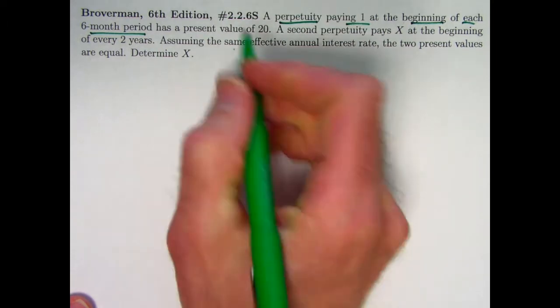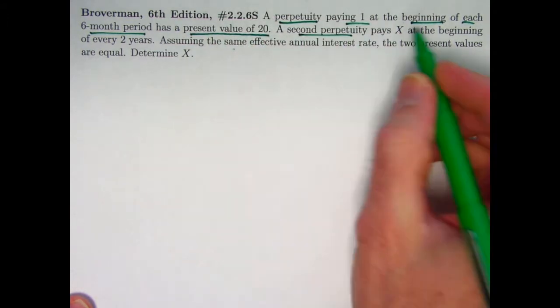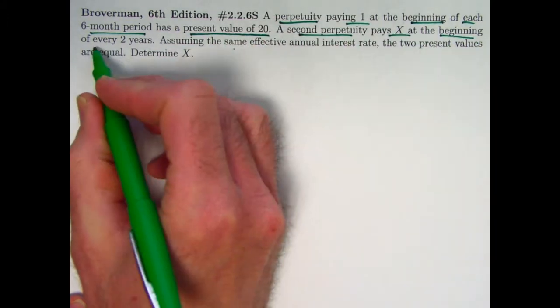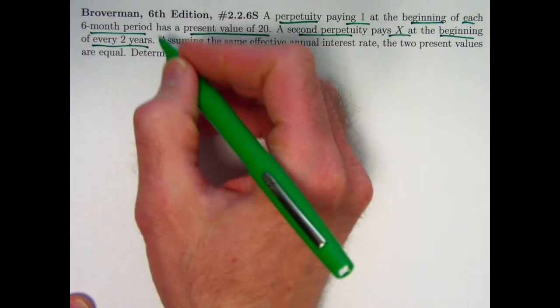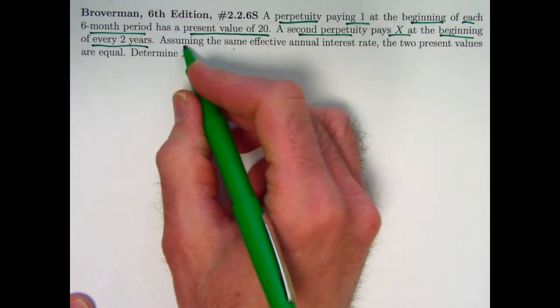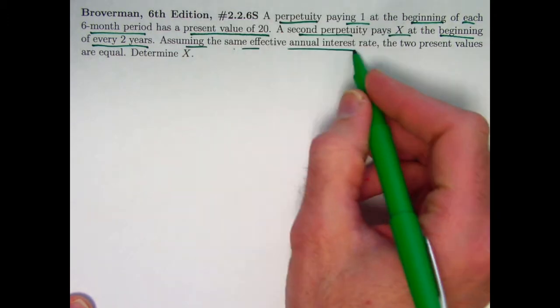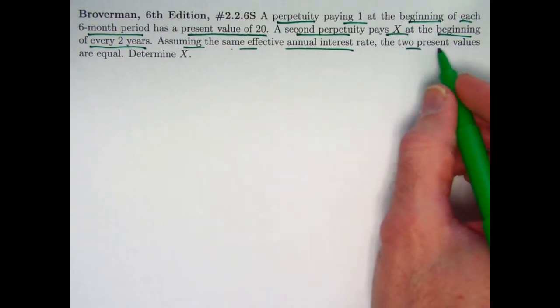Starting at time zero, we're going to evaluate the present value right away. It's going to be a perpetuity due and that present value equals 20. A second perpetuity pays x at also the beginning of every period, but now the periods are two years. So these are different payment periods. Assuming the same effective annual interest rates, the two present values are equal. Determine x, determine the payment amount of the second perpetuity.